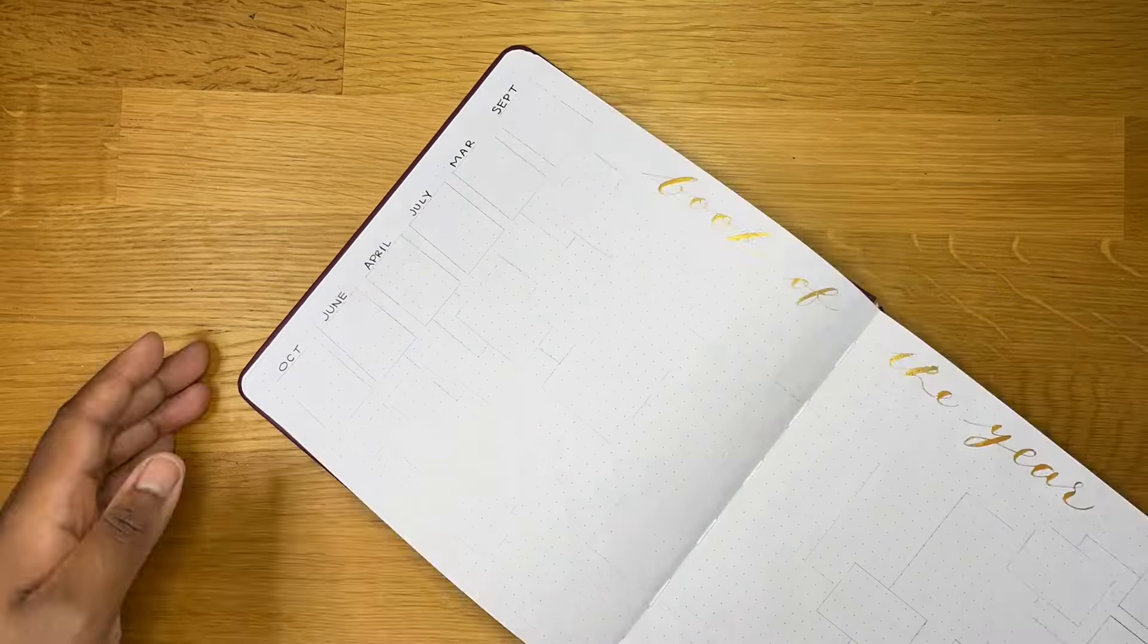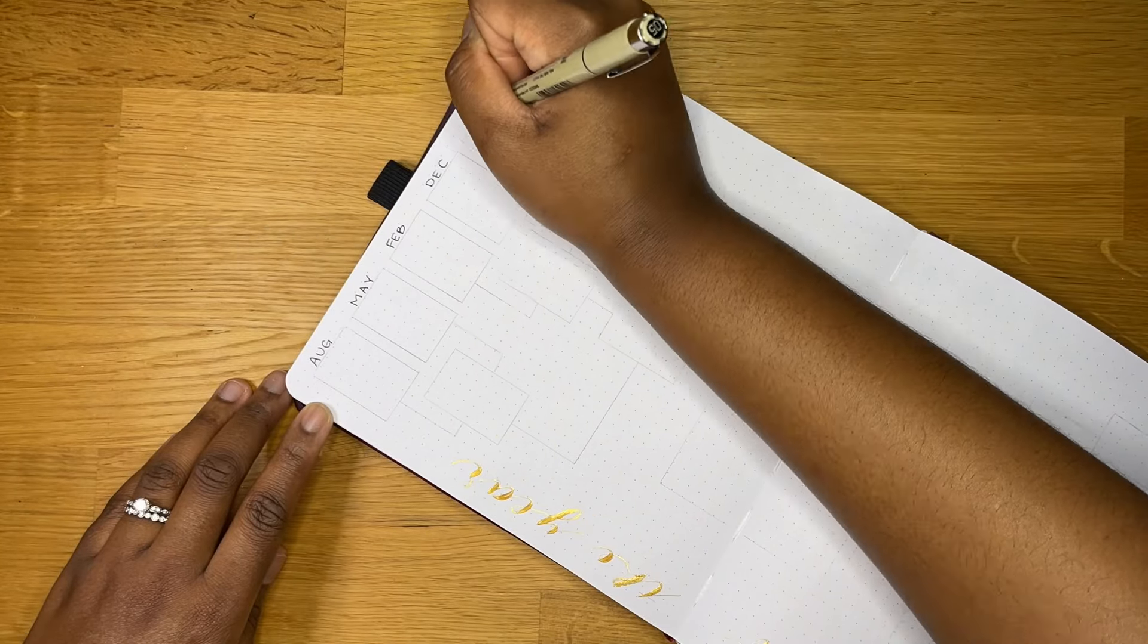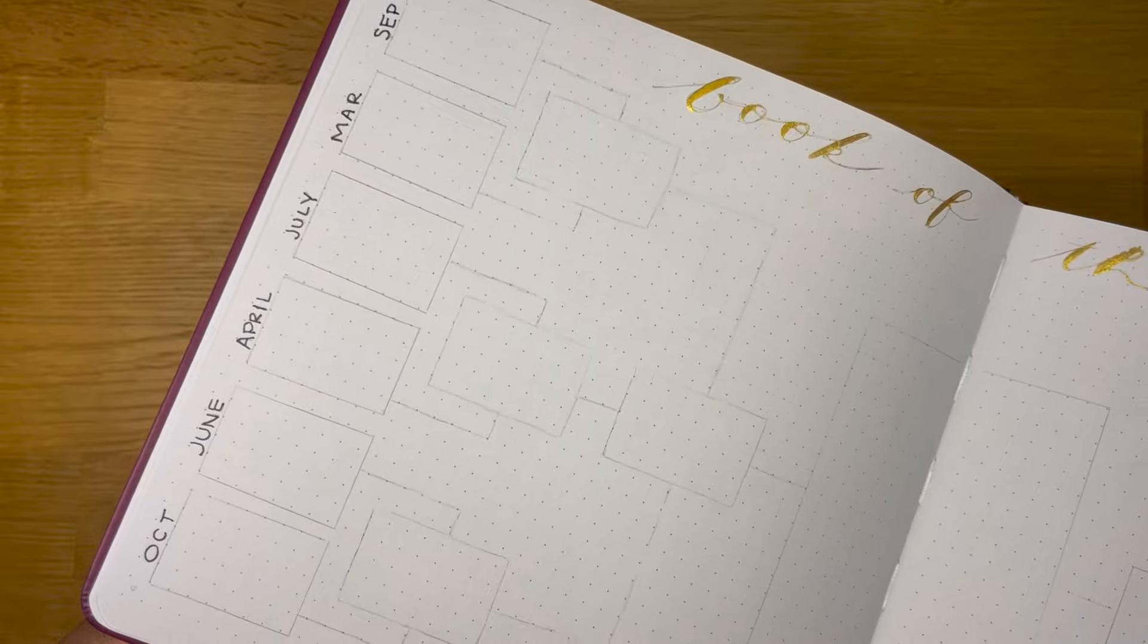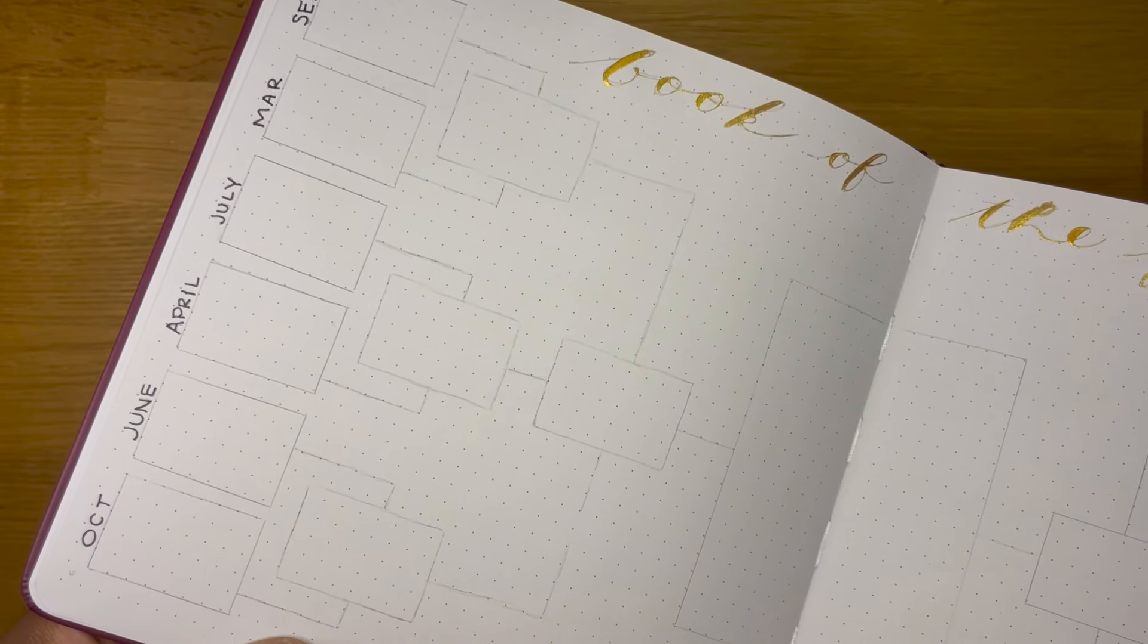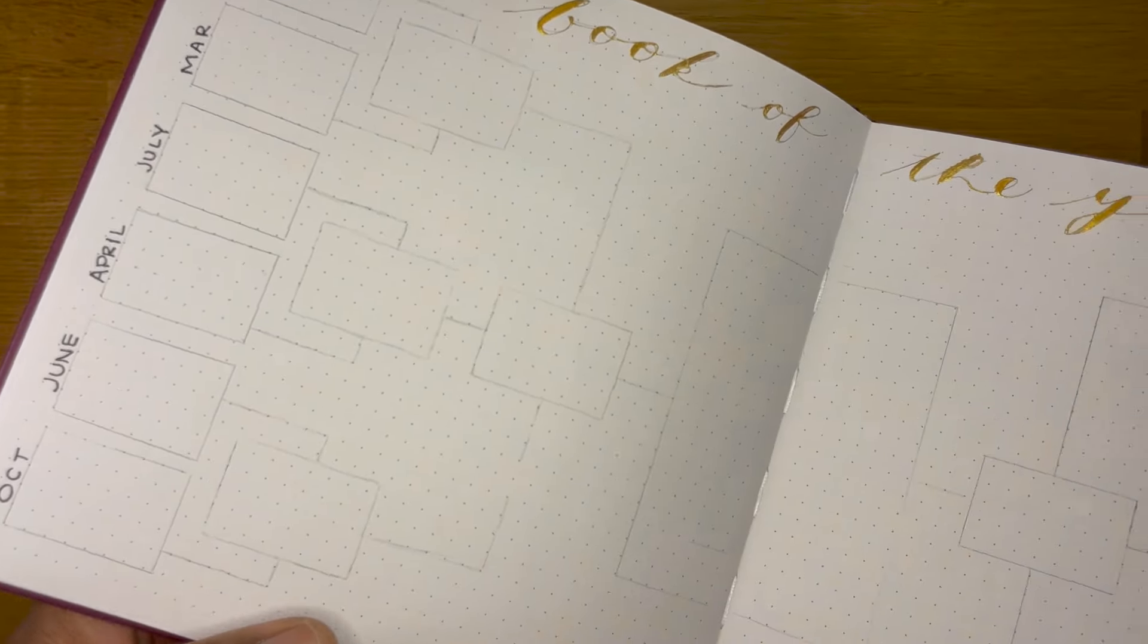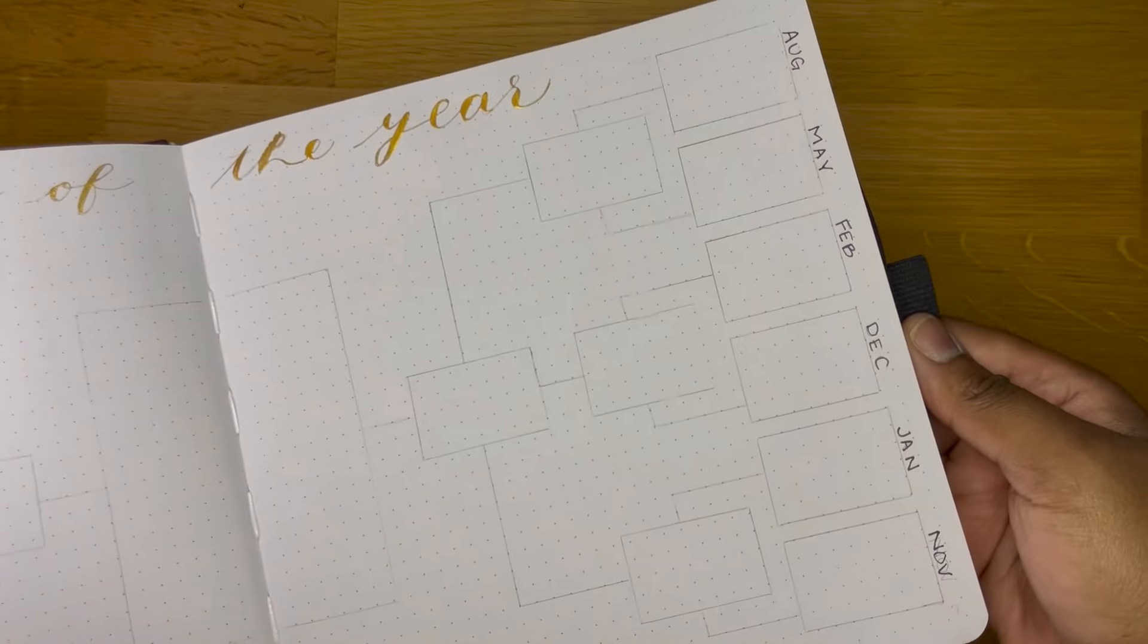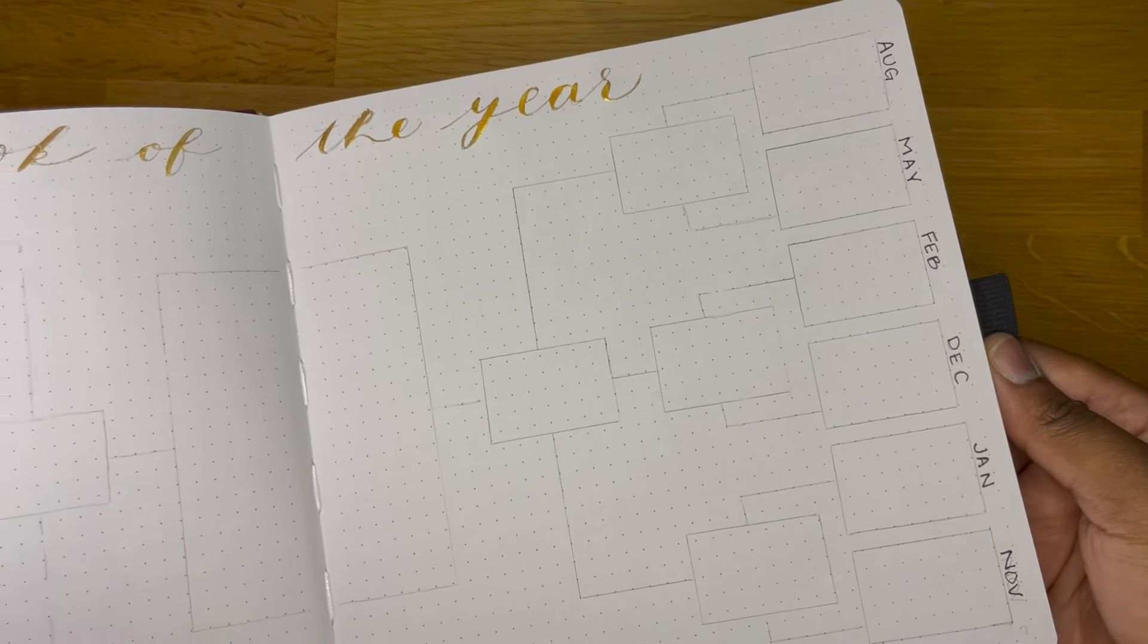I'm also doing the same thing that I did last year and I kind of randomized the months, so I have September going against March, July against April, June against October, August against May, February against December, and January against November.